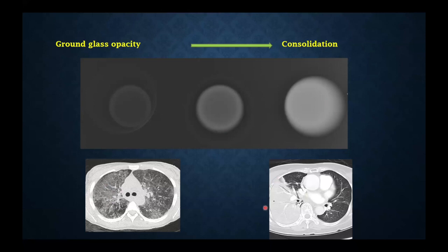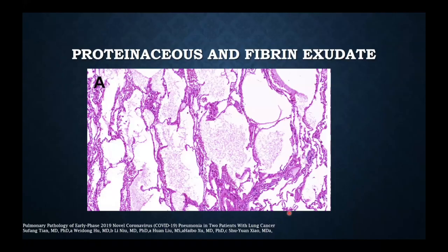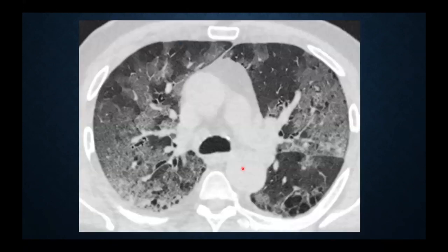When we have a little bit of fluid in the alveoli, we see what's called ground glass opacity. When there's a lot of fluid in the alveoli, we see what we call consolidation. This is from an article describing pathology found in two patients with lung cancer in China who also had COVID-19 infection. What they found was proteinaceous material in the alveoli — the fibrinous exudates — seen on CT scan as ground glass opacities.